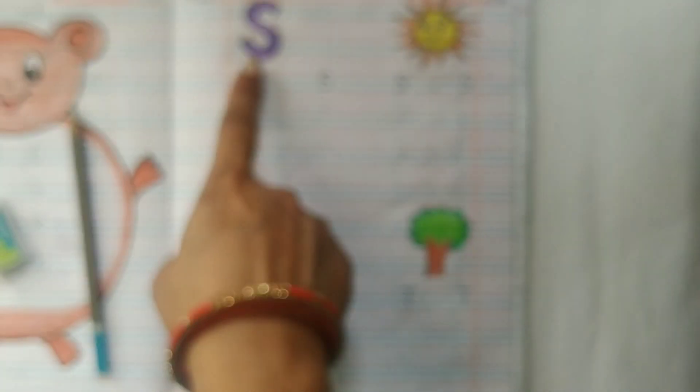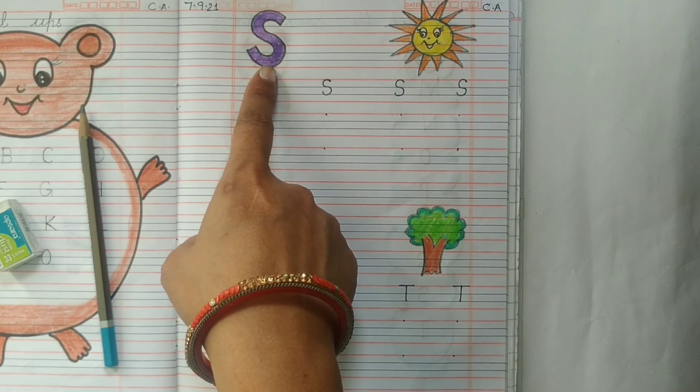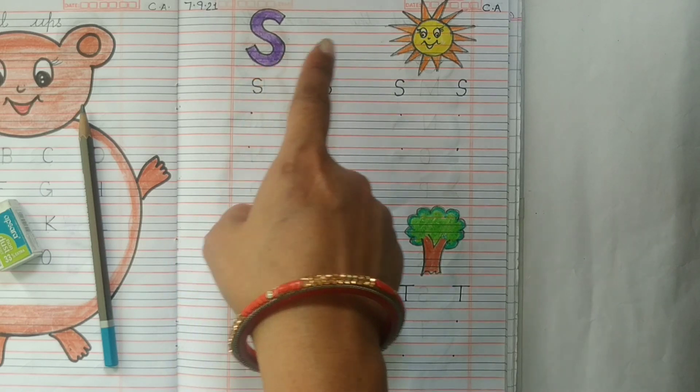Look here kids, this is letter S. The sound of letter S is sun. S for sun.